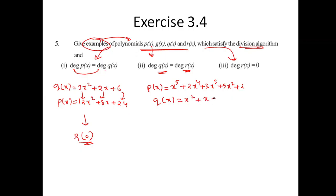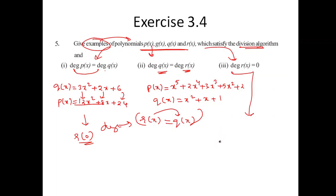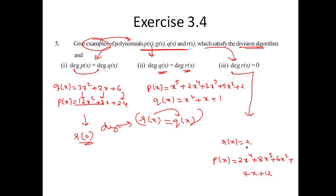The remainder R of X should satisfy: degree of R of X must be less than the degree of the divisor. Take R of X as 2 — a constant, so degree zero. Take F of X as 2x⁴ plus 8x³ plus 6x² plus 4x plus 12. When dividing, the degree of R of X will be zero throughout. This is given as a homework exercise.